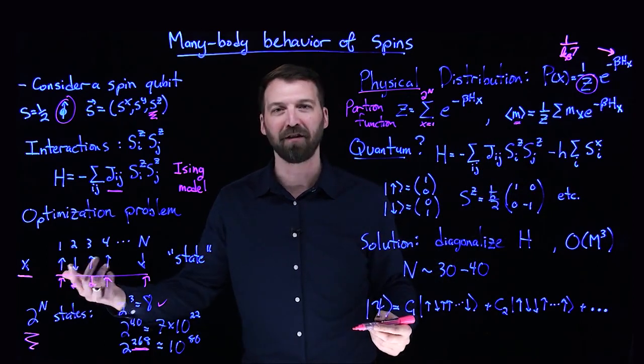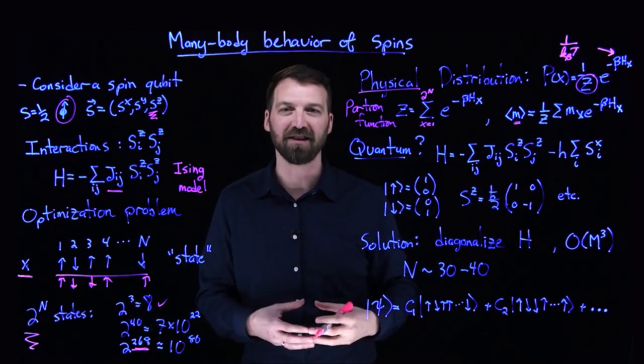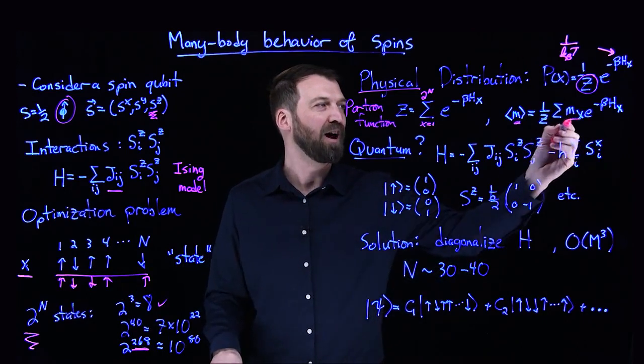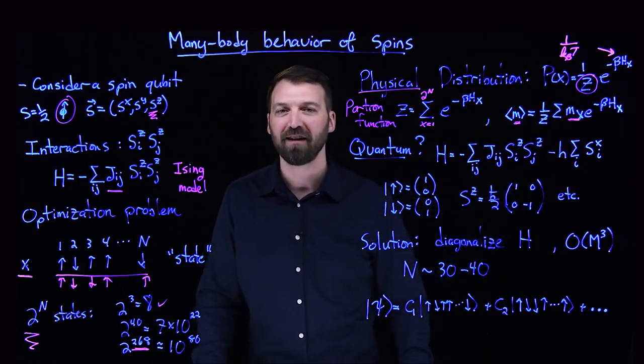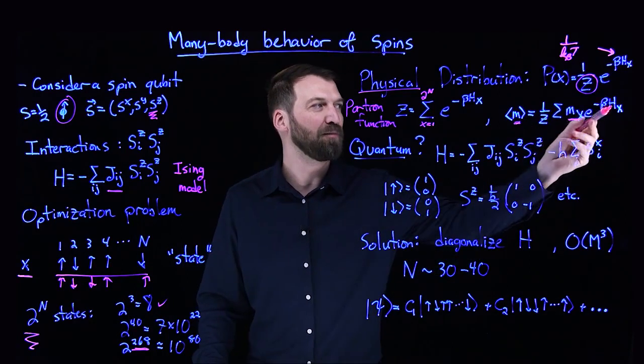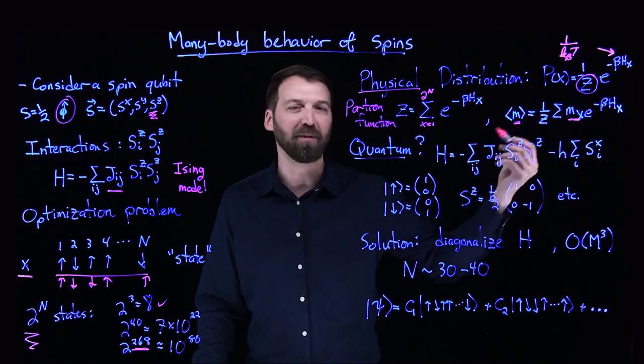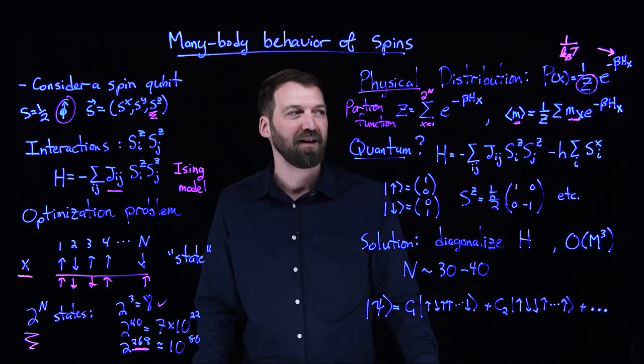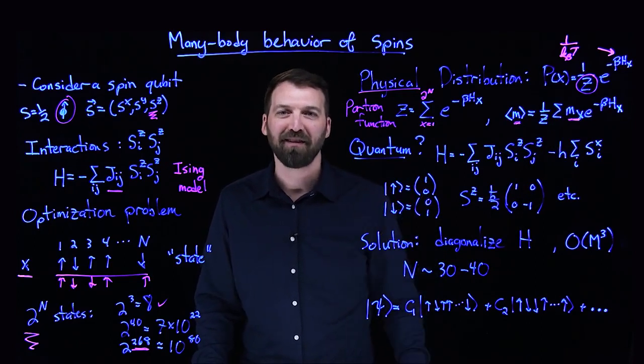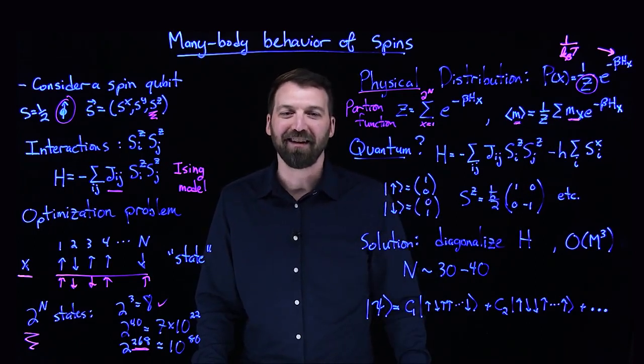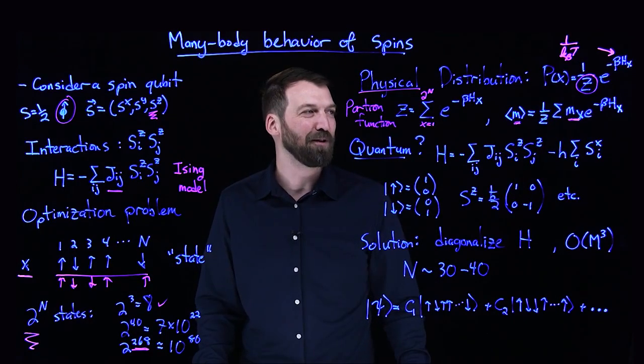Only through that procedure, only by performing that sum or trace, are we able to calculate physical quantities such as the magnetization. For example, if all of these were pointing up, the magnetization per spin is 1. I would have to calculate that for every single configuration, weighted by Boltzmann weight and normalized by the partition function.